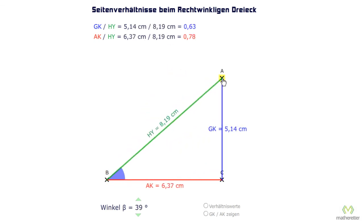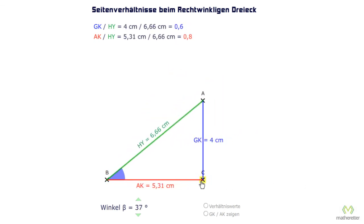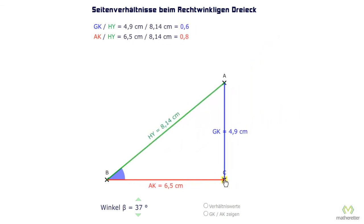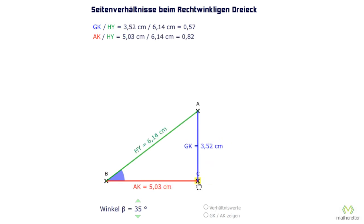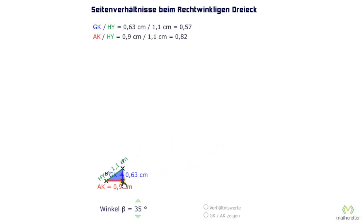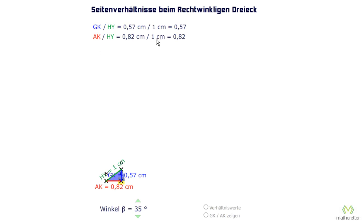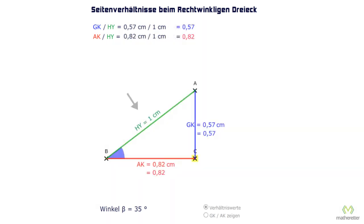An important note: since the centimeter values depend on how big or small our triangle is, we can use a little trick in which the ratios are always directly displayed. We make our triangle so small that the hypotenuse is exactly 1 centimeter long. We now have 0.57 centimeters for the opposite leg, and 0.57 divided by 1 centimeter is 0.57 — exactly the ratio. The adjacent is 0.82 centimeters long, divided by 1 centimeter is again 0.82. That is, putting the hypotenuse at 1 centimeter, we can read off the ratio values directly from the opposite and adjacent side lengths.